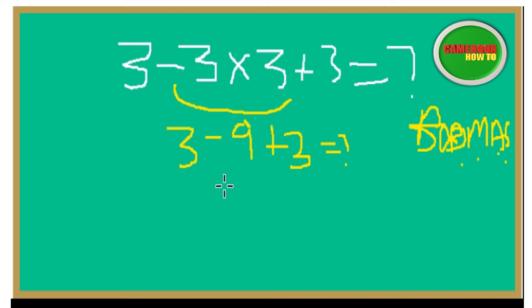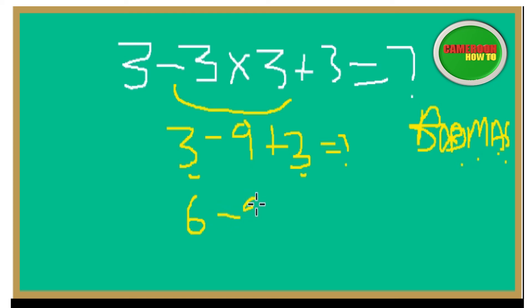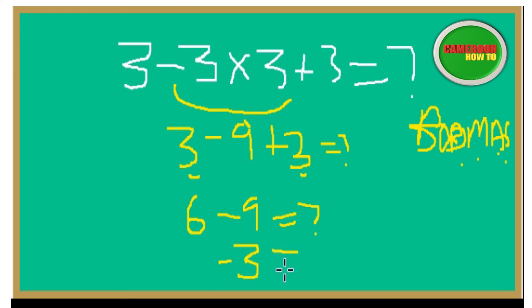We still need to follow BODMAS. The third step is addition, so we add: 3 plus 3 is 6. The expression becomes 6 minus 9, which equals negative 3.